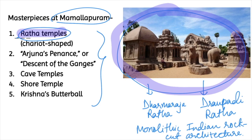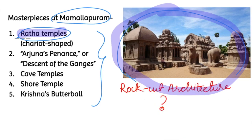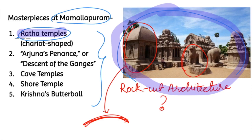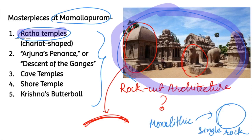Rock-cut architecture is when a particular structure or building is carved out of a rock where it naturally occurs. Monolithic means carved from a single piece of rock.